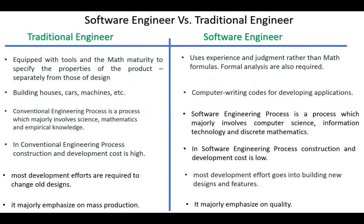Next, software engineer versus traditional engineer. Traditional engineers are equipped with tools and math maturity to specify the properties of the product, separately from those of design, while software engineers use experience and judgment rather than math formulas. But formal analysis are required. The task of traditional engineers is to design and build houses, cars, machines, etc., while the task of software engineers is writing code for developing applications.